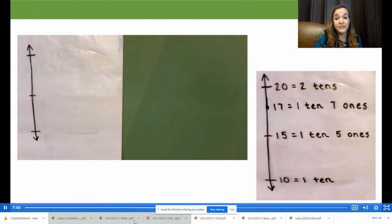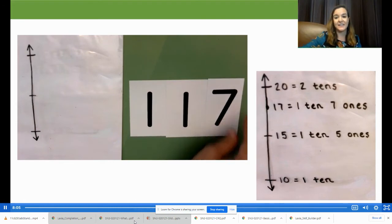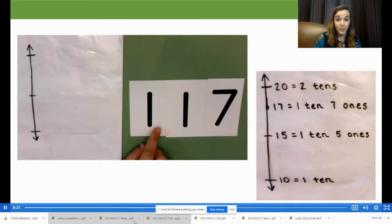To round 17 milliliters to the nearest 10, we made a number line with end points of one ten and two tens. Talk out loud how our end points are going to change when we round 117 milliliters to the nearest 10.